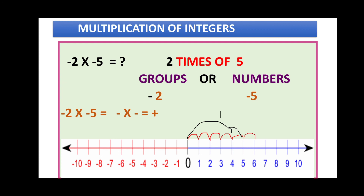Now for the second group: one, two, three, four, five — five steps, five numbers completed. Two groups are completed and our result is ten, which is positive. That is why we moved in the forward direction. In this way you can find the multiplication of integers on the number line.